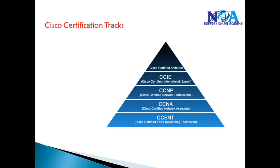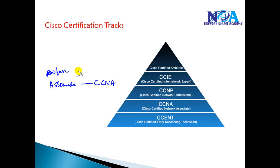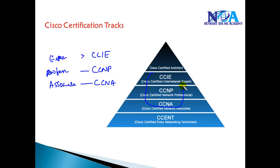Cisco provides different certification tracks for different levels. Cisco majorly divides into three levels: the first is associate level, which we call CCNA — Cisco Certified Network Associate. Then we have the professional level, CCNP — Cisco Certified Network Professional. And then expert level certifications, CCIE — Cisco Certified Internetwork Expert. These are the three major levels of certifications.